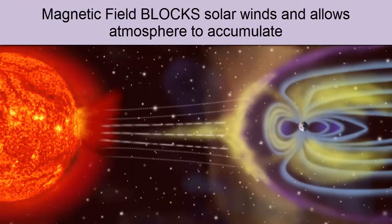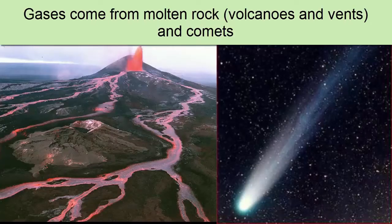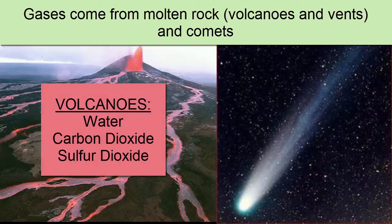With the magnetic field now deflecting solar winds, Earth's atmosphere started to collect, primarily through the accumulation of gases bubbling up from the molten rock and eventually erupting from volcanoes once the Earth's surface cooled enough to create a solid surface. Volcanoes are a major source of gases like water, carbon dioxide, and sulfur dioxide.